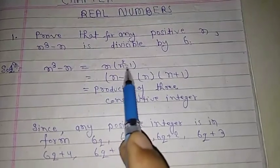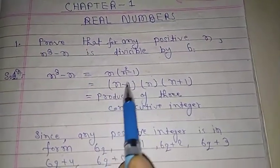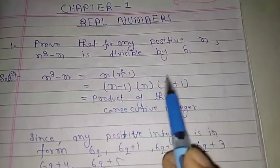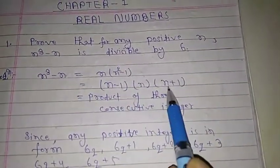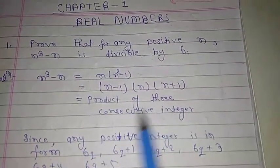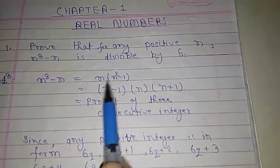Solution: n³ - n = n(n² - 1) = (n-1)(n)(n+1), because n² - 1 = (n-1)(n+1). This is equal to the product of three consecutive integers: n-1, n, and n+1 are three consecutive integers.